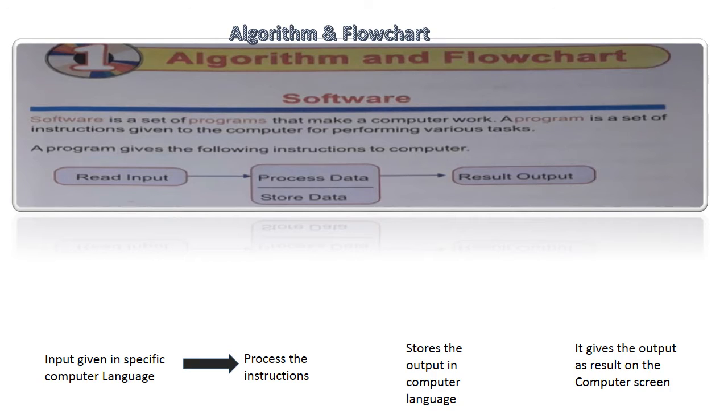Lesson 1 algorithm and flow chart. Do you know what is software? Software is a set of programs that make a computer work. A program is a set of instructions given to the computer for performing various tasks.